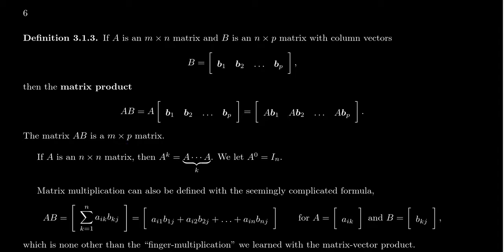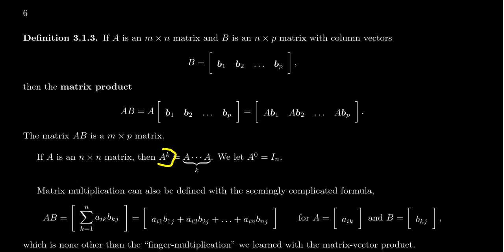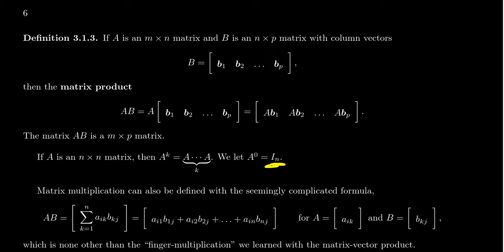For a square n×n matrix A, you can multiply A by itself to get A squared, and then A cubed, and so on. We can define A to the power k (for natural number k) as A multiplied by itself k times. We also define A to the zero power as the identity matrix, analogous to how a scalar raised to the zero power equals the multiplicative identity 1.